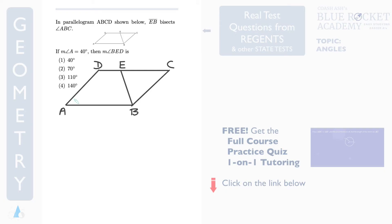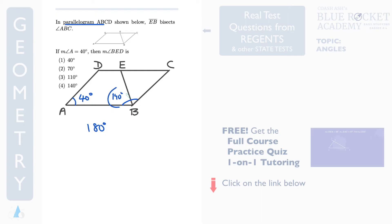Now here, measure angle A is 40 degrees. You've got measure angle BED and they're asking what is its measure. Because this is a parallelogram, the most important property is that if this angle is 40, then this is 140 and this is also 140 — because this plus this should always be 180 degrees. So 140 degrees is 180 minus 40.